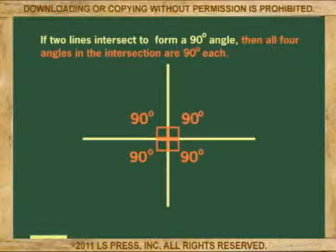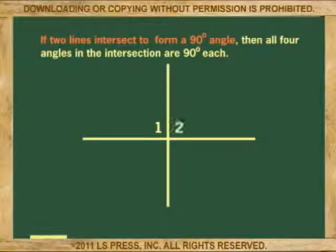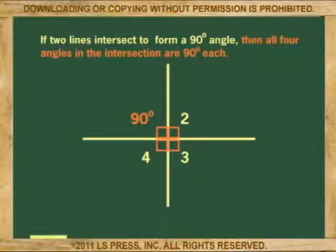The given information is that the two lines intersect forming angles 1, 2, 3, and 4, and that angle 1 is 90 degrees. The then part asks us to prove that angles 2, 3, and 4 are also 90 degrees.